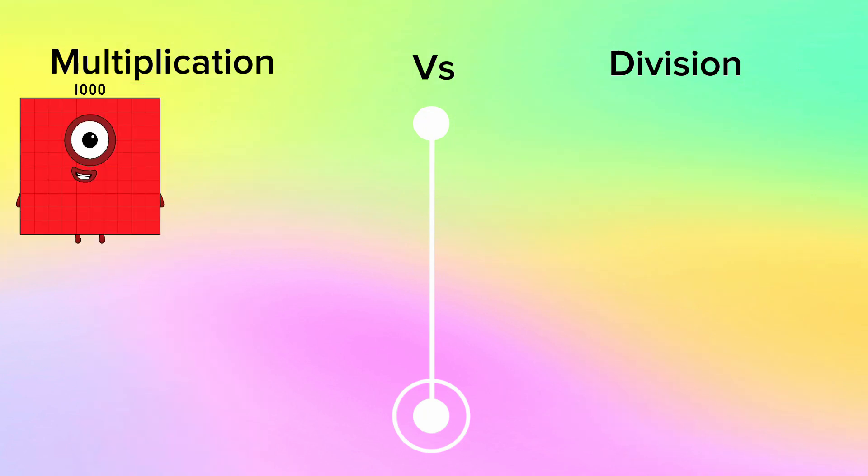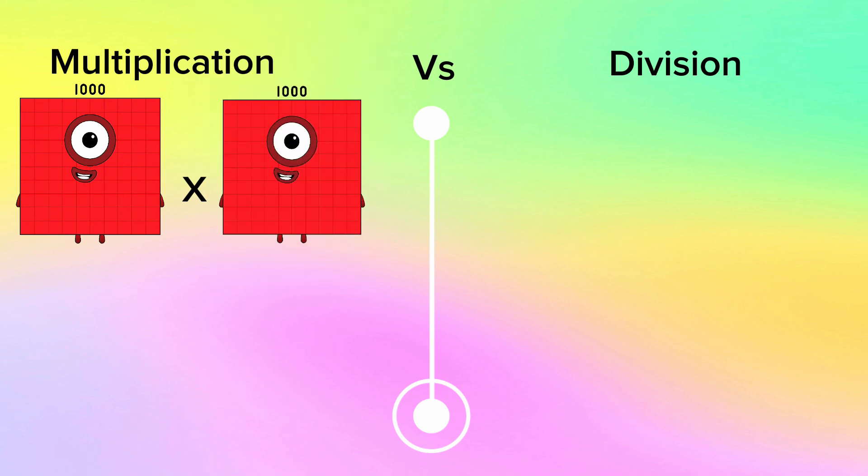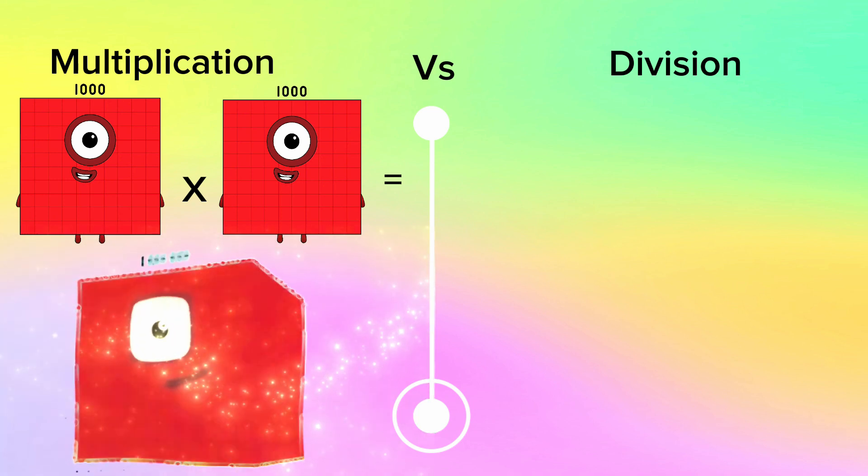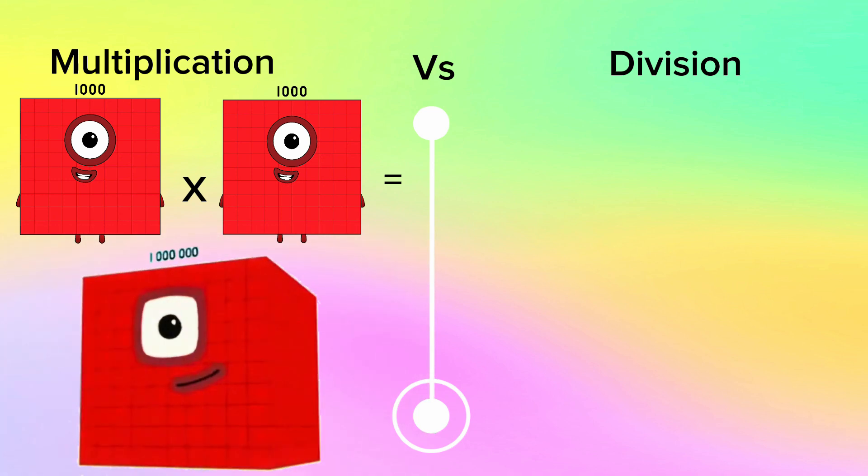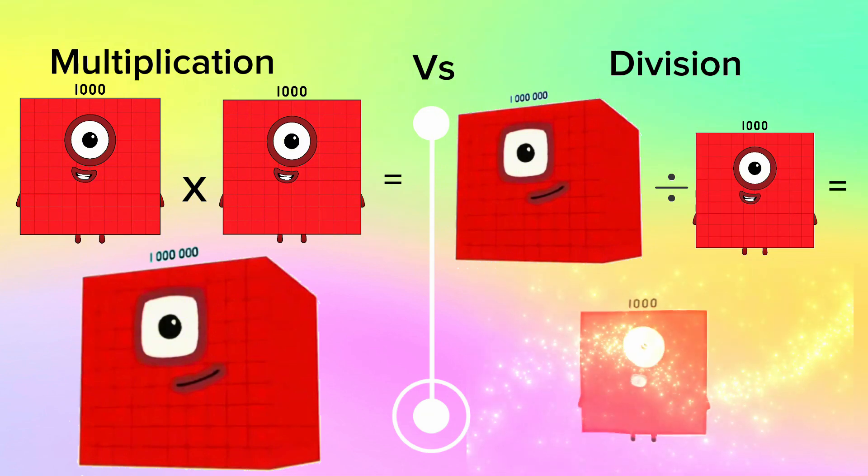1,000 multiplied by 1,000 is equals to 1,000,000. And now in division, 1,000,000 divided by 1,000 is equals to 1,000.